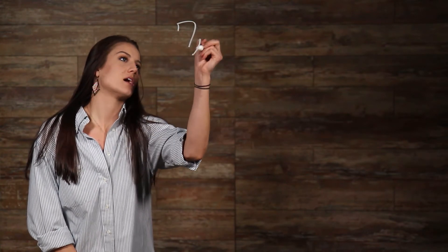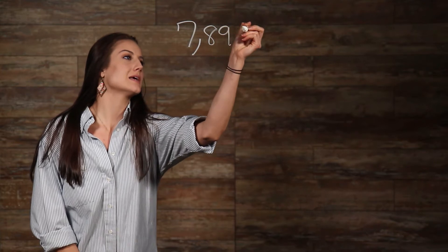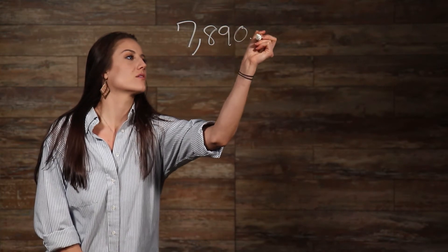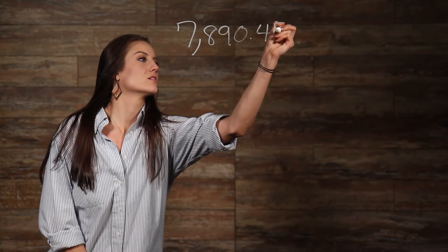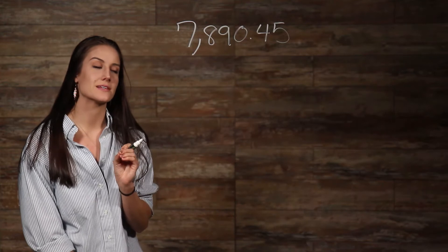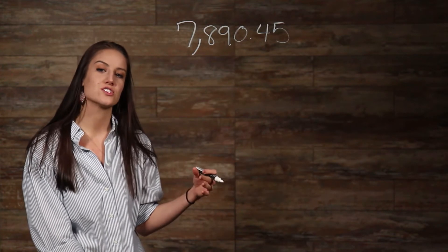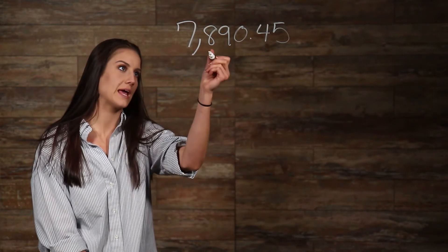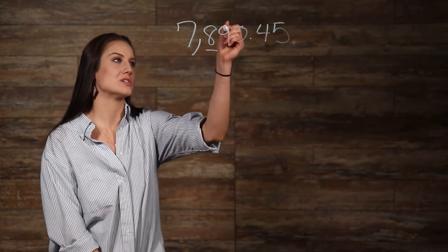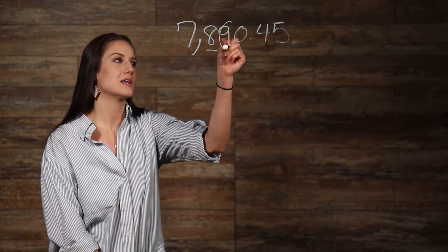Let's look at an example. Round 7,890.45 to the nearest hundredth place. So we need to find our round-off digit, which is the number in the hundredth place, so 8. Now look at the digit one place to the right, which is 9.